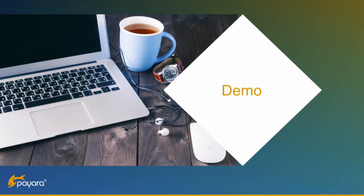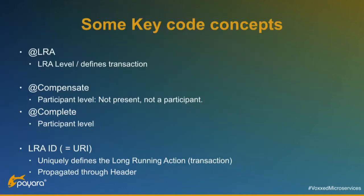Let's start with the demos. First, a few concepts: everything is defined declaratively, so on the JAX-RS endpoint you can define the @LRA annotation, which defines the transaction — does it need to start a new transaction, enlist with an existing one, or even start as a child transaction? Then you can annotate another method with @Compensate or @Complete, and those methods will be called for the compensating or complete action. The only thing propagated through all your microservice flows is that header with an LRA ID, which is a URI that uniquely defines your transaction.